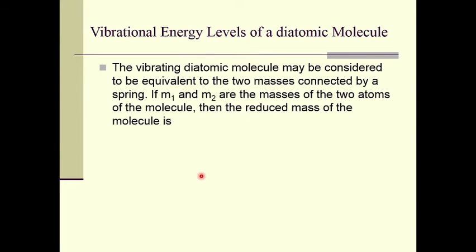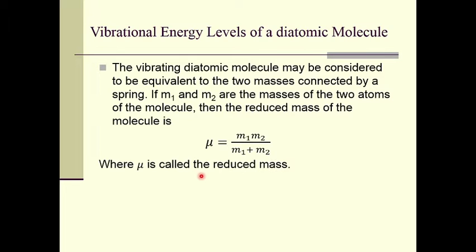The vibrating diatomic molecule may be considered to be equivalent to two masses connected by a spring. If m1 and m2 are the masses of the two atoms of the molecule, then the reduced mass of the molecule is mu = m1·m2 / (m1 + m2), where mu is the reduced mass of the molecule.